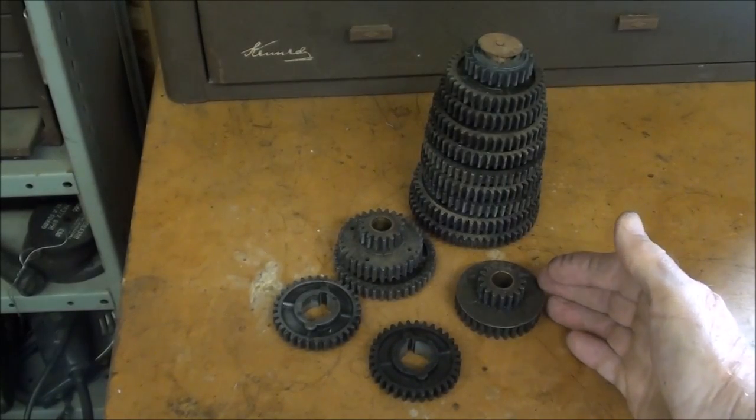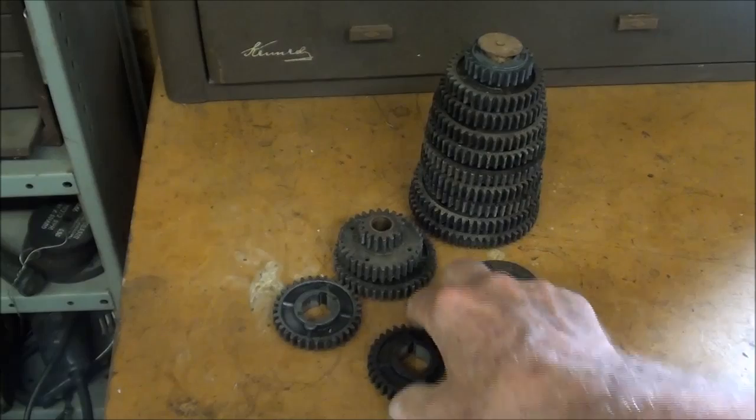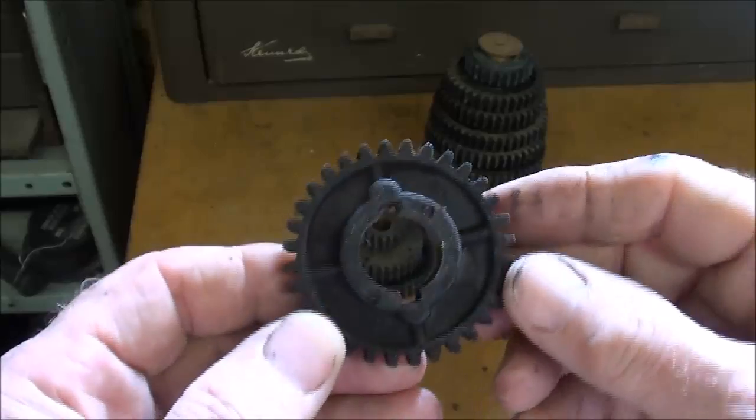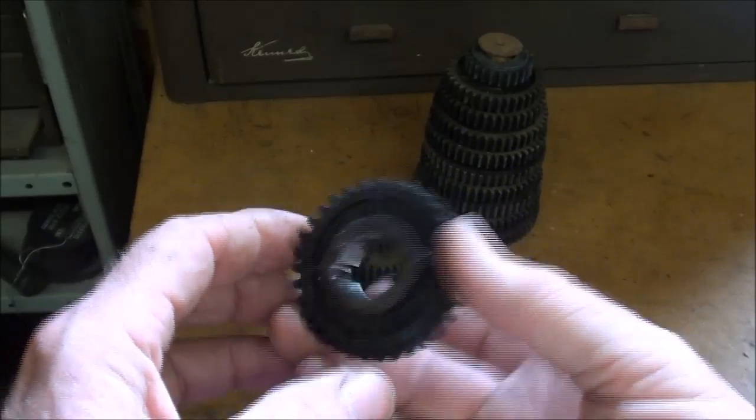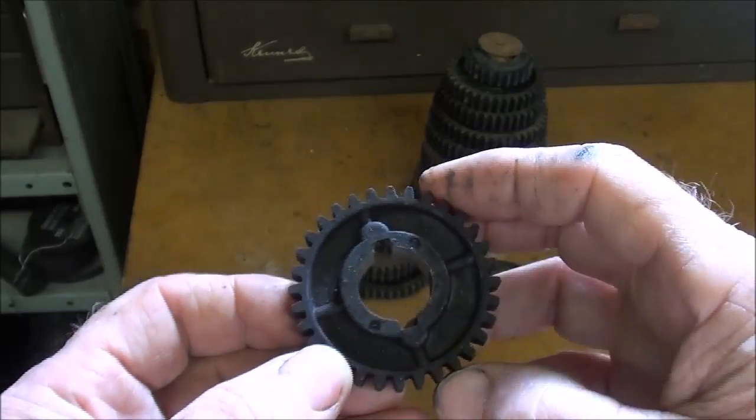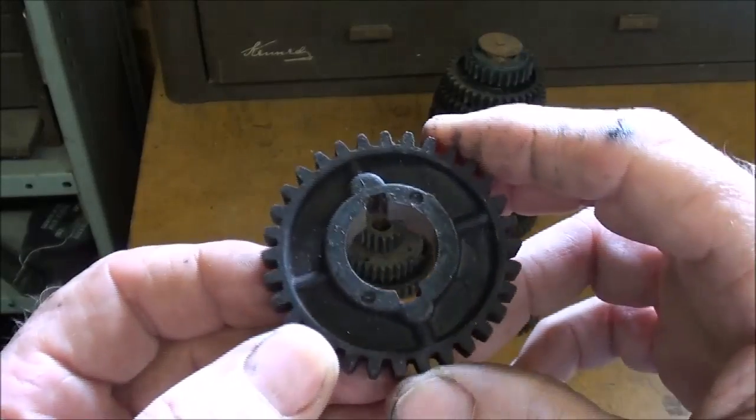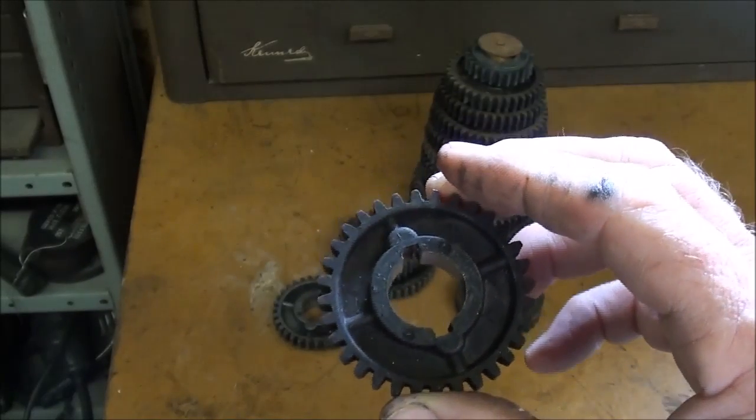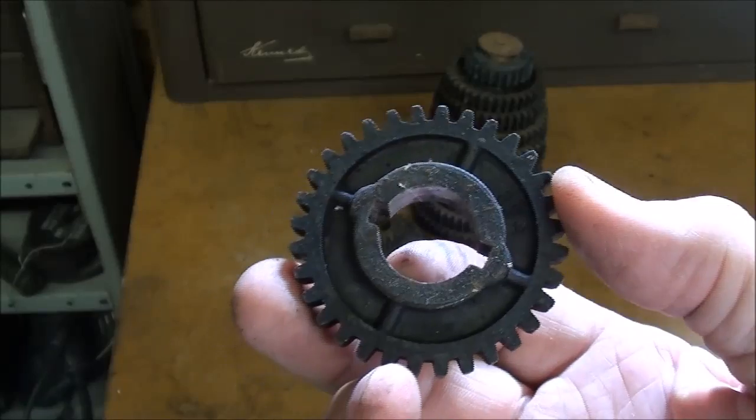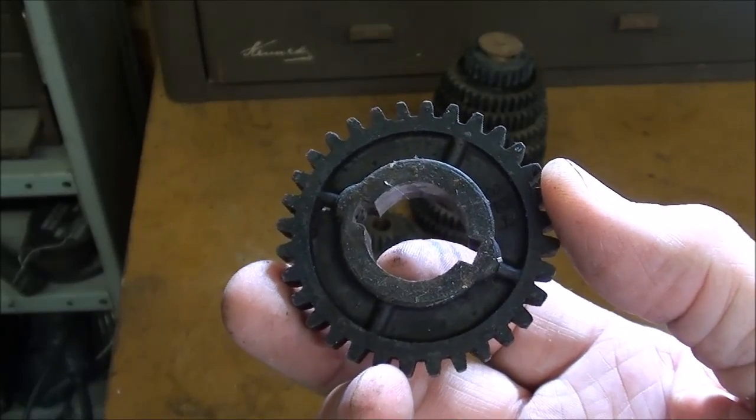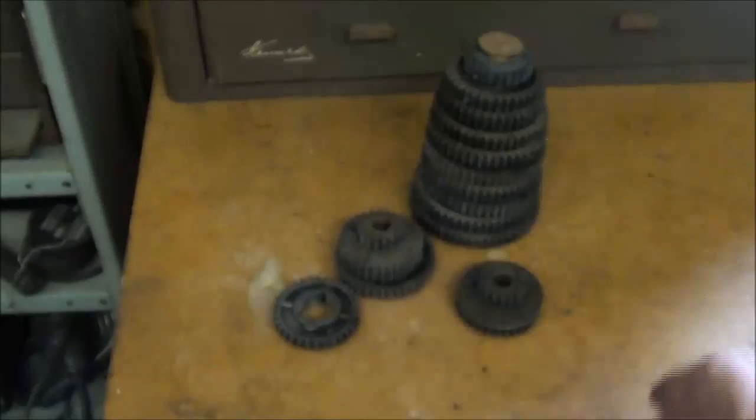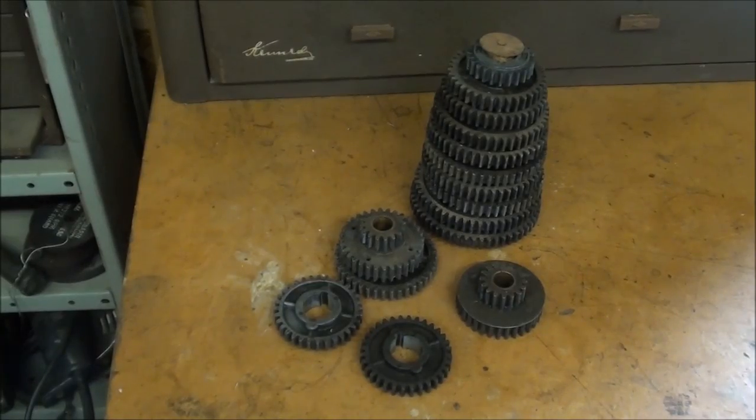All of the change gears used on the Atlas Craftsman lathe are spur gears. That means that the teeth are straight across. These are involute gears as opposed to helical gears or some other gear form. This is the simplest type of gear. I do have another video on how to cut gears for the Atlas lathe. Also one on how to cut gears for a Logan lathe. Those two videos aren't really too much different from one another, but yet there are some differences.